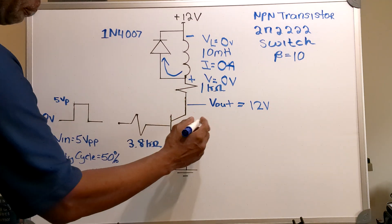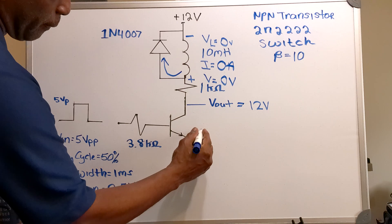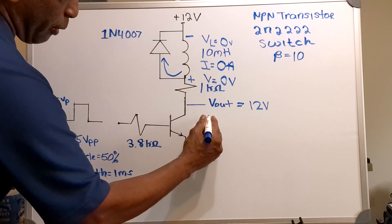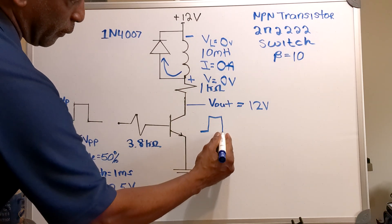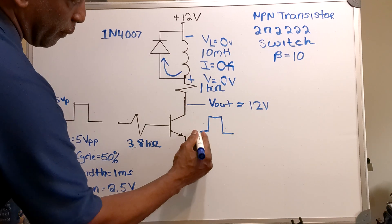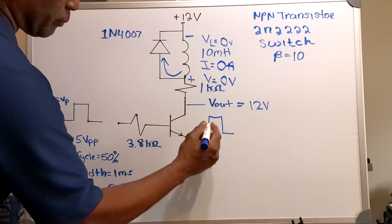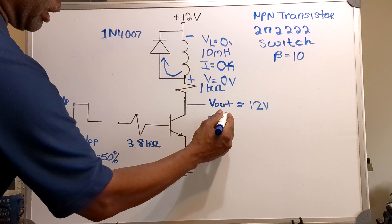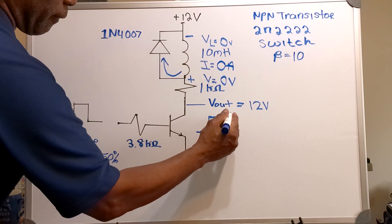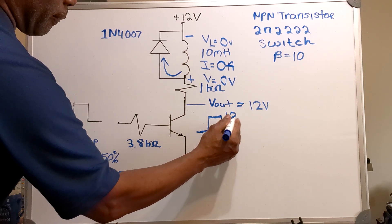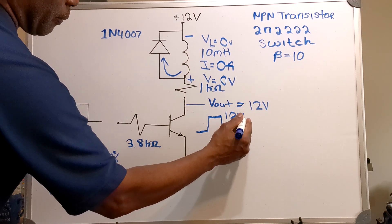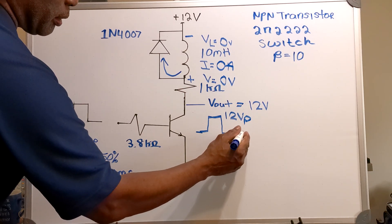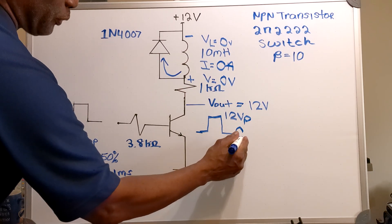The output waveform will be a square wave pulse with a 12 volt peak and zero volts at the bottom.